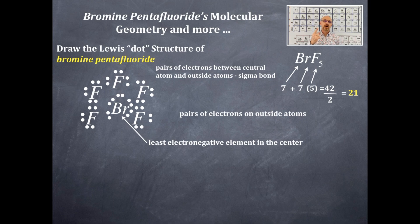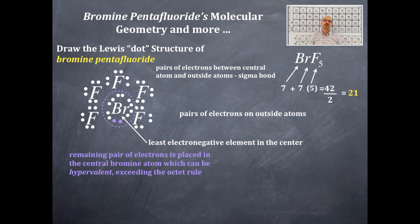Do we have any pairs of electrons left over? We most certainly do. One more pair. What's the next rule? Dump it in the central element. Bromine is certainly hypervalent. It can exceed the octet rule.